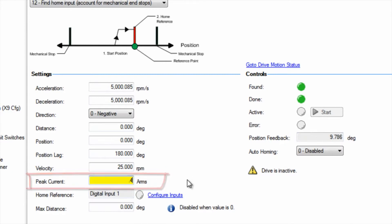Home type 12 allows a device with limited travel to home to an input but does not require the addition of end of travel limit sensors.